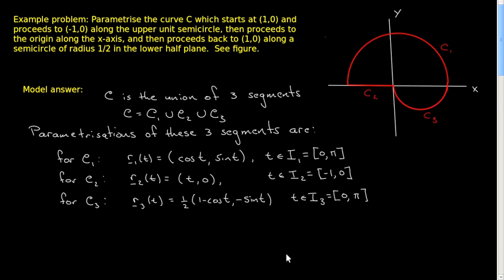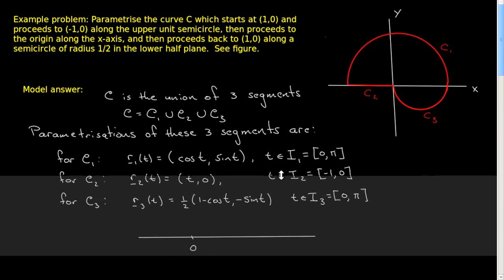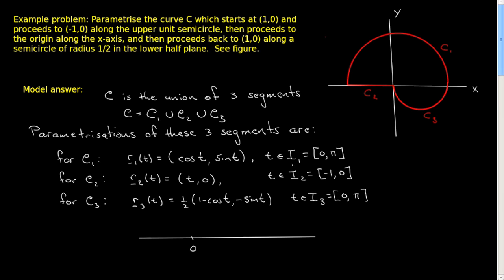To be clear, each of these parametrizations is over three separate intervals. I1 goes from 0 to pi, and it's also the interval I3 — so those intervals actually overlap. Then I2 would be this interval here. So there are three separate intervals and three separate algebraic expressions giving this parametrization.